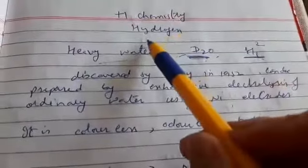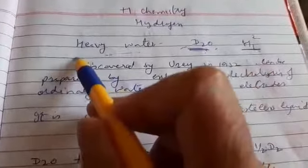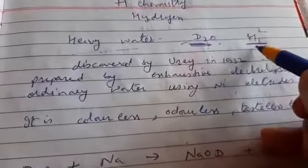Hello students, this is plus one chemistry class. We were doing the chapter on hydrogen, and the next topic we will do today is heavy water. Heavy water is D2O, formed from the second isotope of hydrogen.